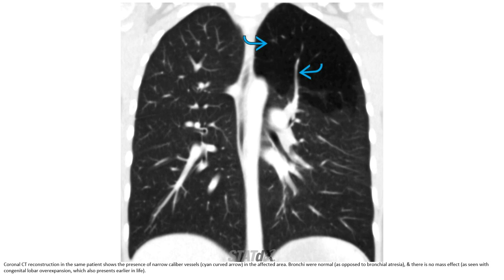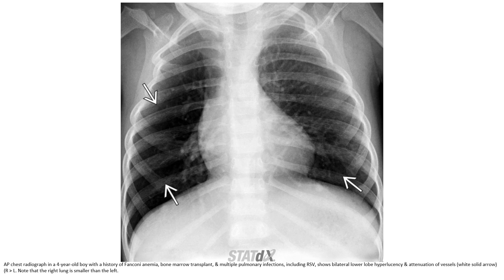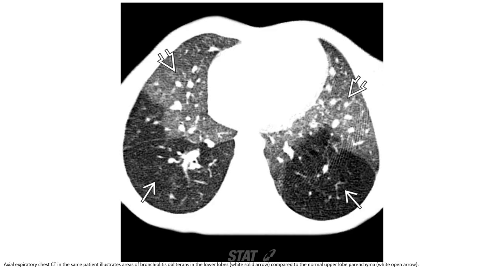Coronal images also show over-expansion, which is present early in life. A chest radiograph in a four-year-old boy with aplastic anemia, bone marrow transplant, and multiple pulmonary infections including RSV, shows right lower lobe hyperlucency and attenuation of vessels, more on the right than left. Note the right lung is smaller than the left. Axial expiratory CT in the same patient illustrates bronchiolitis obliterans in the lower lobe compared to the normal lung parenchyma.